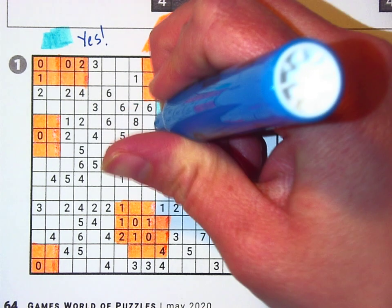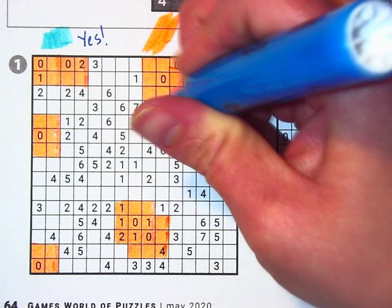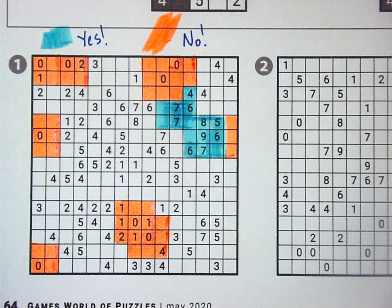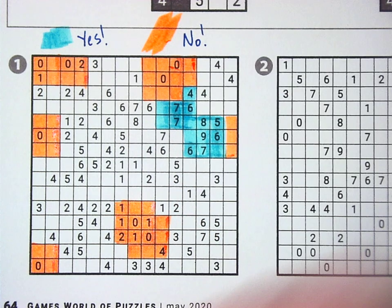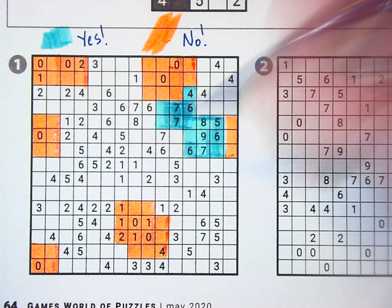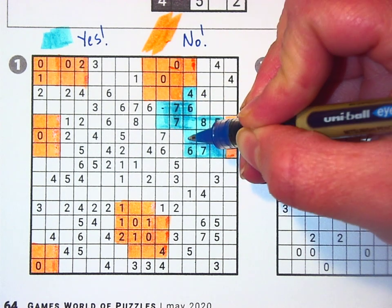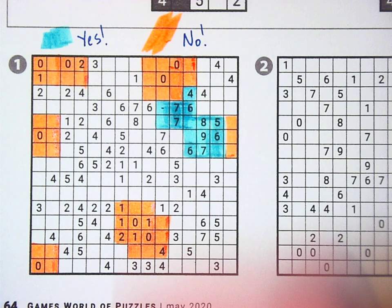Right there. And the same thing with the seven below it, because right now I have one, two, three, four, five, six, seven spots filled in, which means the other two are no.